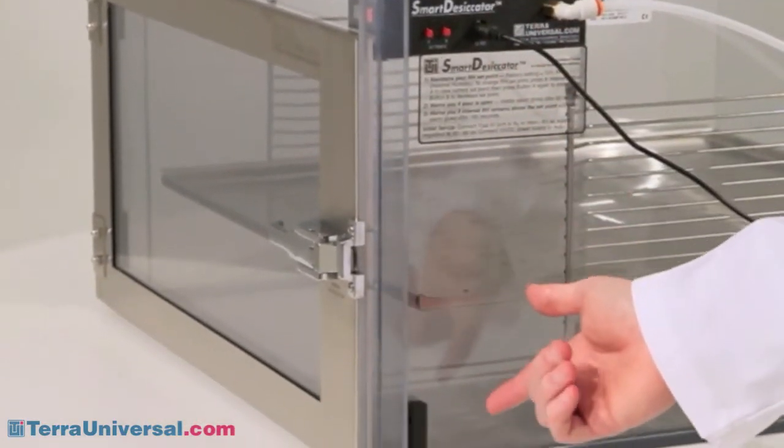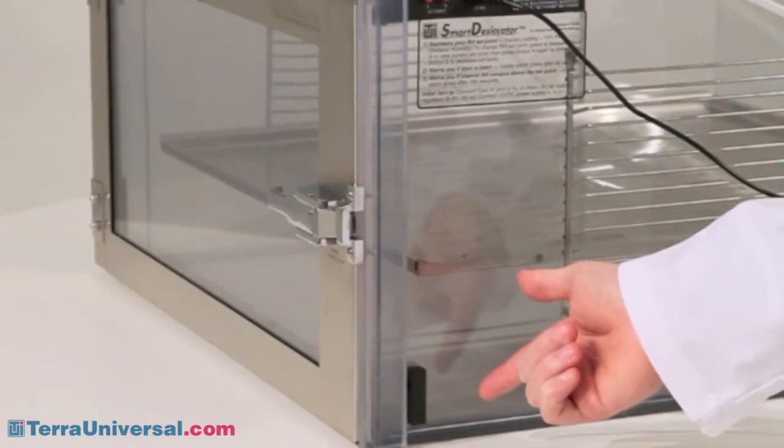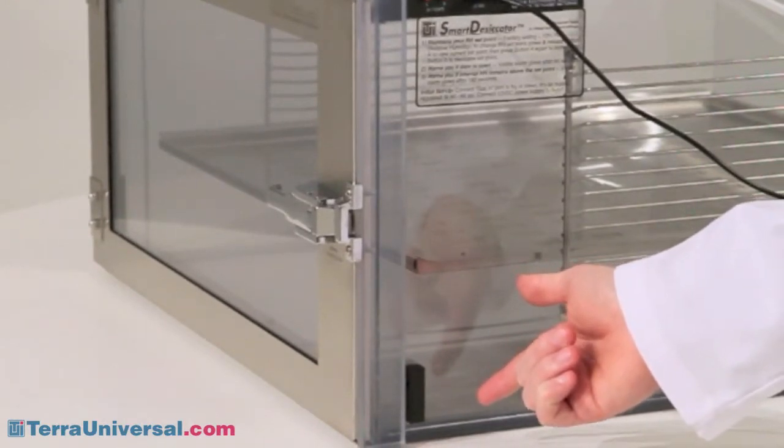Terra's automatic RB valve, mounted down here, allows safe pressure release during nitrogen purging.